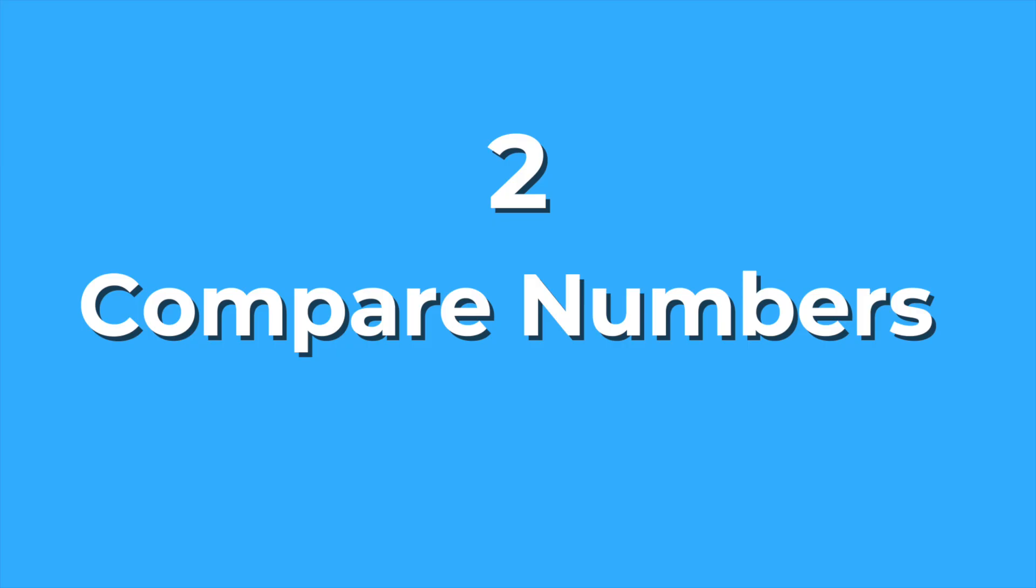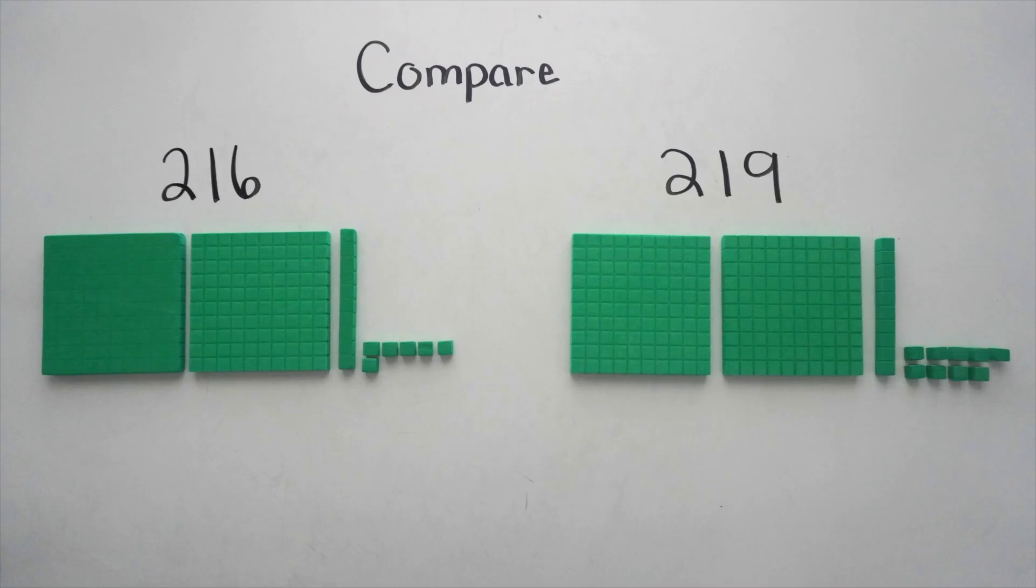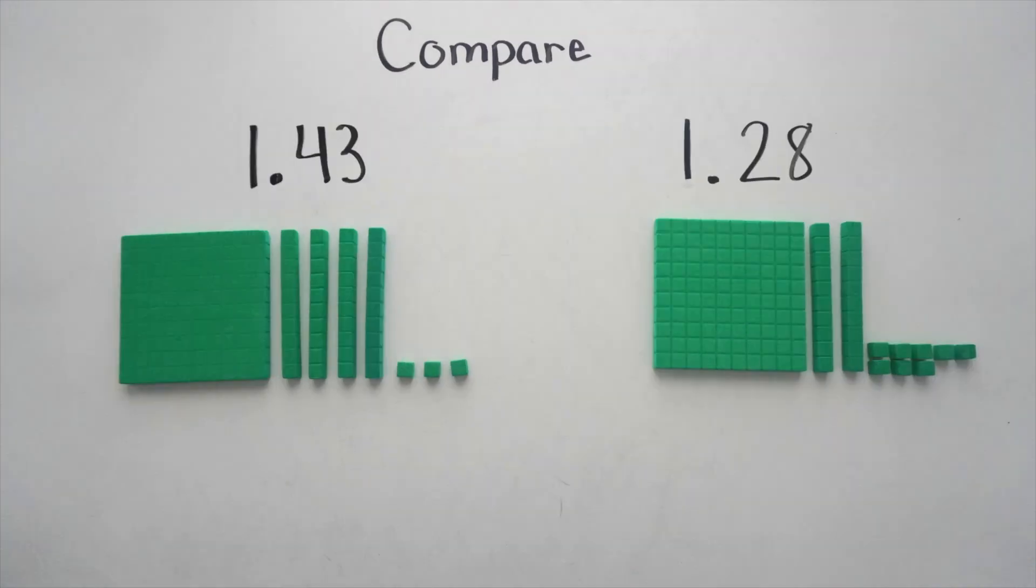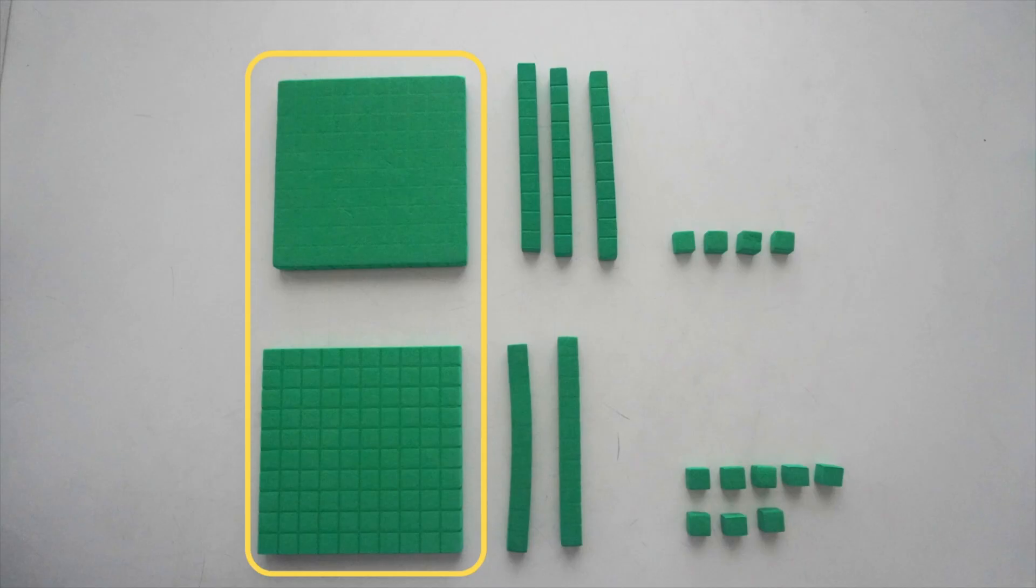Number two, comparing numbers. Whether it's whole numbers or decimals, putting blocks next to each other helps to show which value is greater. And by looking at each place value moving from left to right, students can immediately see how the place value for each number is the same or different.